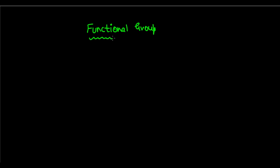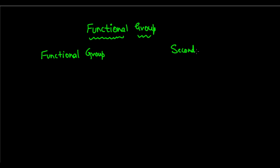Now, each functional group has a specific secondary suffix — except for the halo group, which is a prefix. For all other functional groups, it is a secondary suffix. So let's have a look at the functional groups and their respective secondary suffixes. Please remember this — it is important that you start learning the secondary suffixes and the word roots for nomenclature.